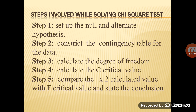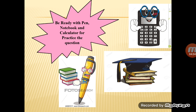To summarize in Hindi: first, set up a hypothesis; second, fill in different values to construct the contingency table; then calculate the degree of freedom and the critical value; and after all that, draw a conclusion. My dear students, please be ready with pen, notebook, and calculator. We will take a question and solve it step by step so it is easily understood.